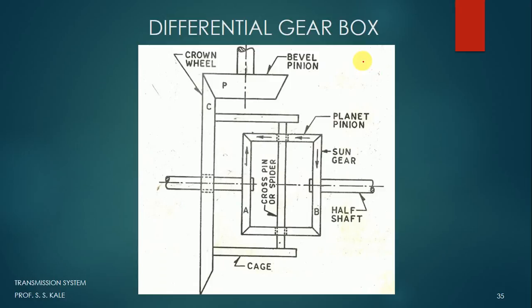Now let's understand the construction of this differential gearbox and then we will see the working. In a differential gearbox, this bevel pinion is connected to the propeller shaft. We have already seen the final drive — the final drive consists of two bevel gears: the pinion bevel gear and the crown wheel. There are various types of bevel gear such as straight bevel gear, cycloid bevel gear, and hypoid bevel gear. This bevel pinion, mounted on the input shaft, meshes with the crown wheel. One shaft goes to the left side wheel and the other shaft goes to the right side wheel.